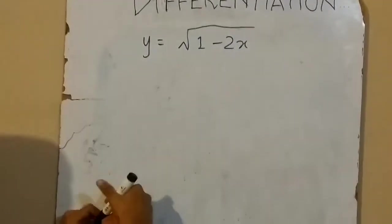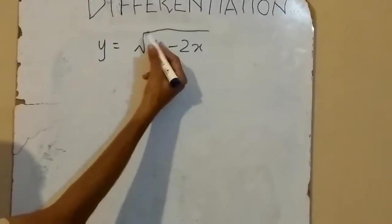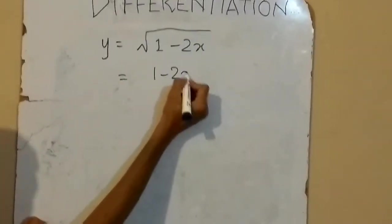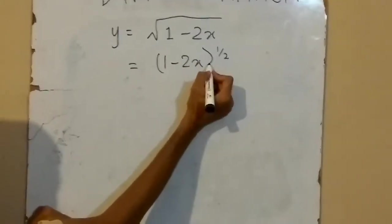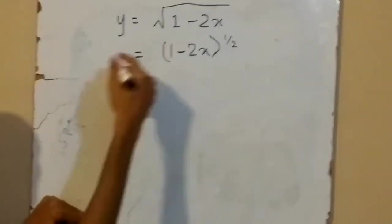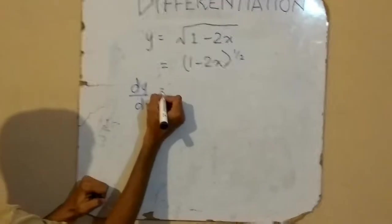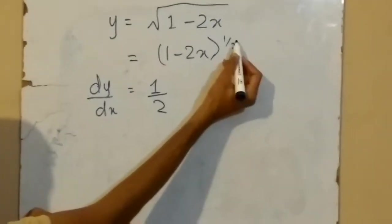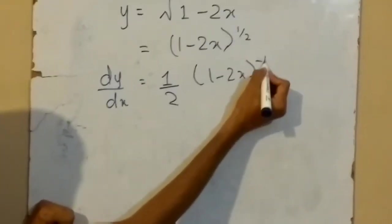Now this is a composite function as it has a power not equal to 1. We can write it as (1 minus 2x) to the power of 1/2. If we differentiate this, the same procedure applies: dy upon dx equals — the power comes to the coefficient with a reduction of 1 in power — giving (1 minus 2x) to the power of minus 1/2.